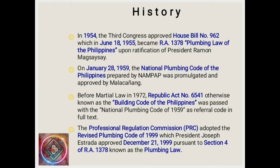In January 28, 1959, the National Plumbing Code of the Philippines, prepared by NAMPAP, was promulgated and approved by Malacañang. Before martial law in 1972, Republic Act No. 6541, otherwise known as the Building Code of the Philippines, was passed with the National Plumbing Code of 1959 as referral code. The Professional Regulation Commission (PRC) adopted the revised plumbing code of 1999, which President Joseph Estrada approved on December 21, 1999, pursuant to Section 4 of RA 1378, known as the Plumbing Law.